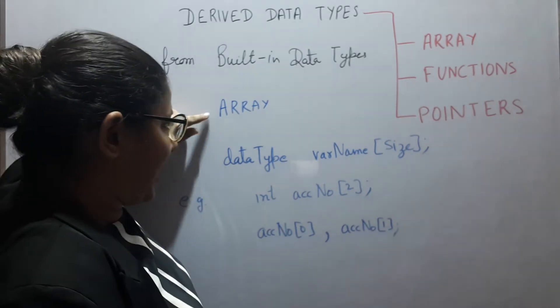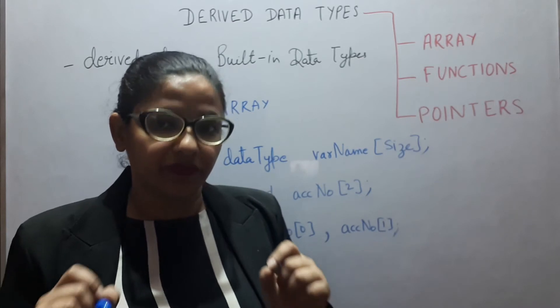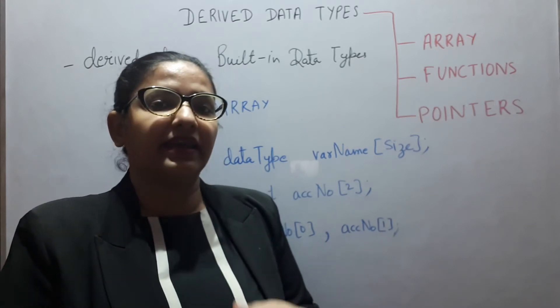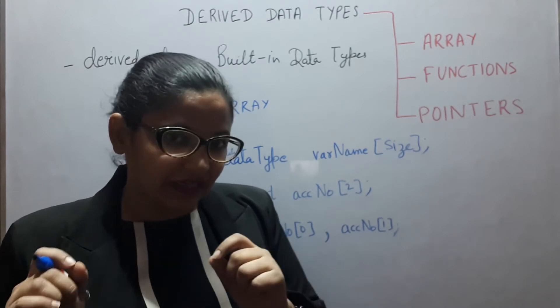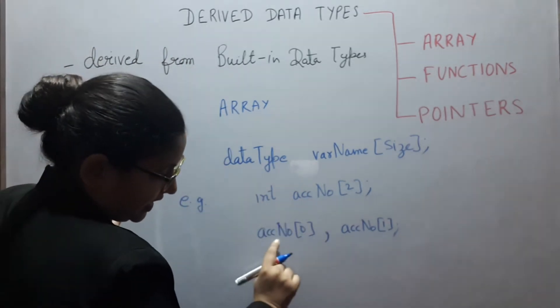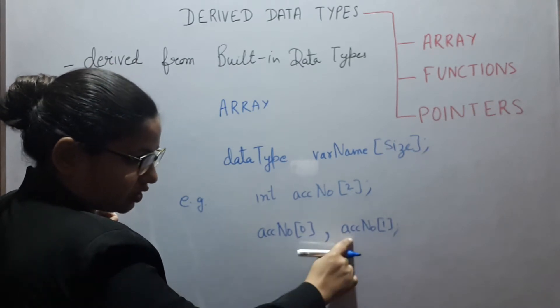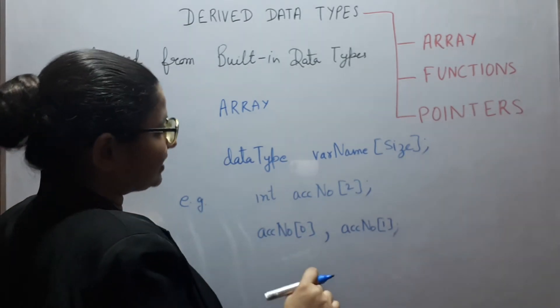So, array is a collection of variables. Array is a collection of variables of similar data types. As we can see, array is a collection of variables of similar data type.